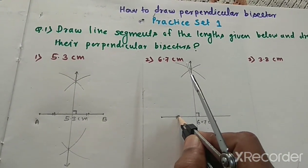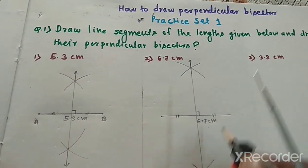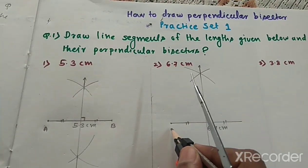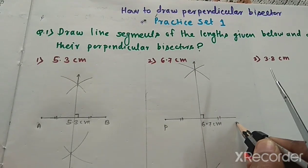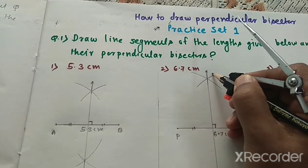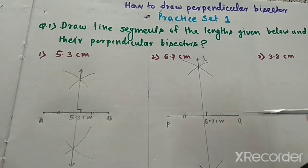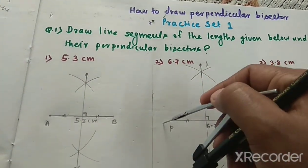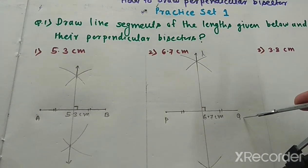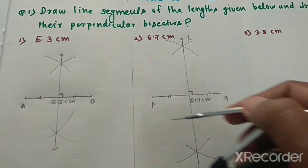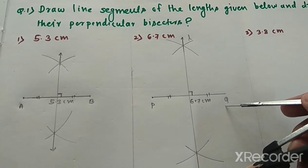हम लोग इस segment को name भी दे सकते हैं. Suppose this segment is PQ. यह perpendicular bisector is line L. Means line L bisects segment PQ, or line L perpendicular bisects segment PQ.